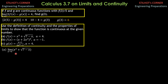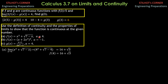The limit as x approaches 4 of x² + √(7 − x) equals 4² + √(7 − 4) = 16 + √3. Since the limit of f(x) as x approaches 4 equals f(4), which is also 16 + √3, the function is continuous at a = 4. Since the limit of f(x) as x approaches 4 equals f(4), f(x) is continuous at x = 4.